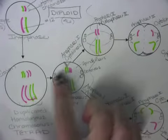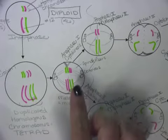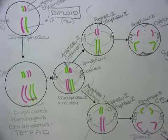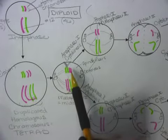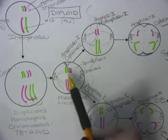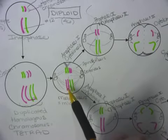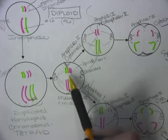Since spindle fibers have a role in dividing chromosomes, what that means is that potentially spindle fibers might not grab hold the way that they should. So let's just go back to this point in our cell division process.